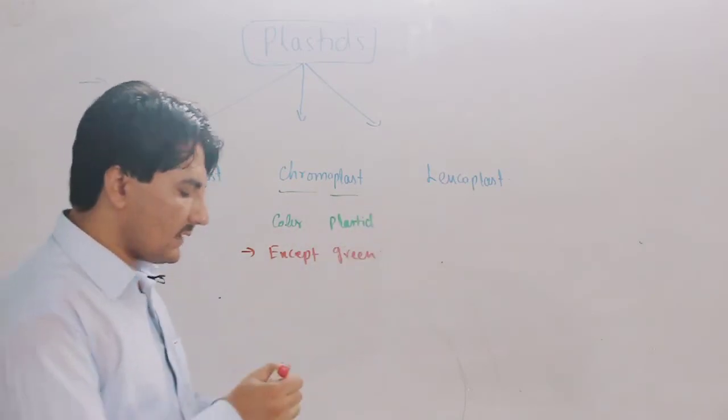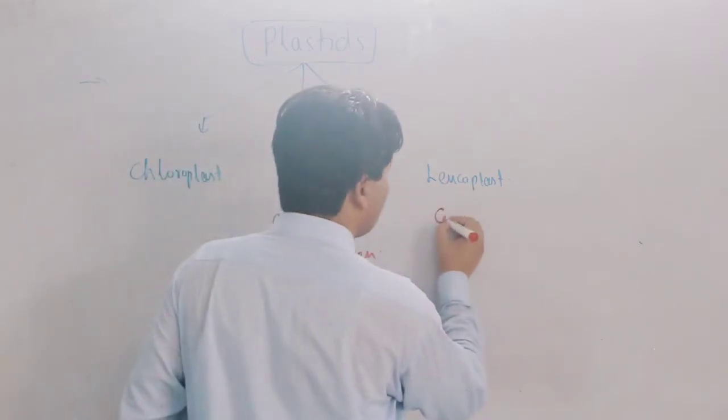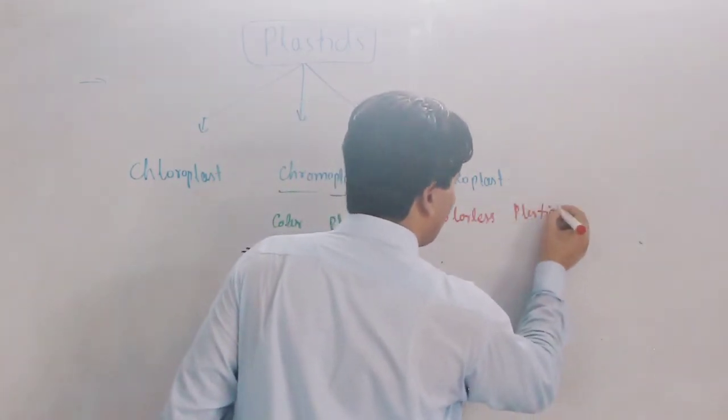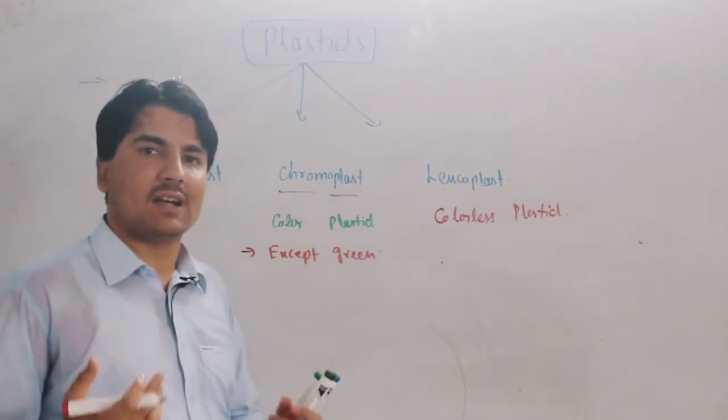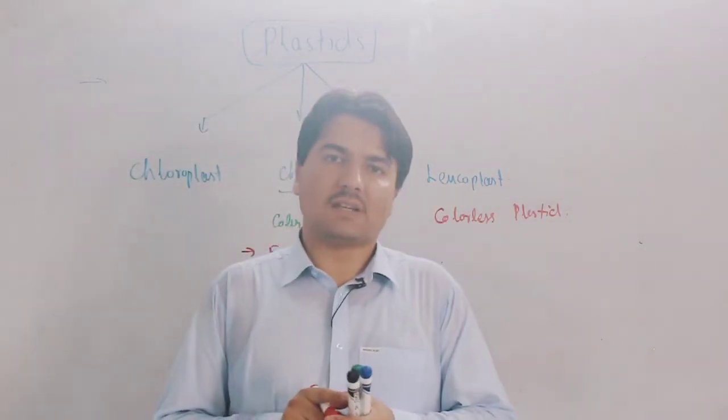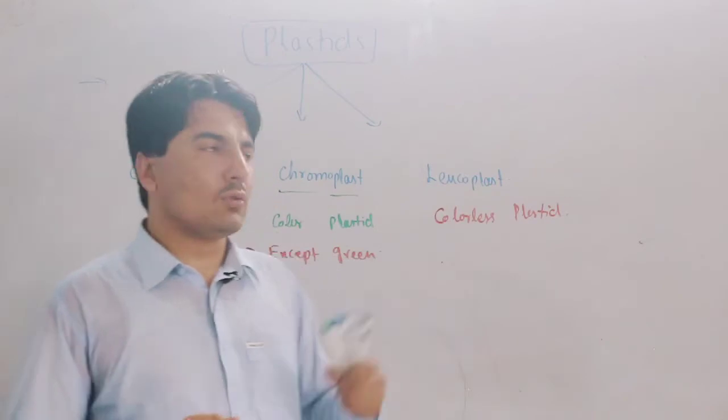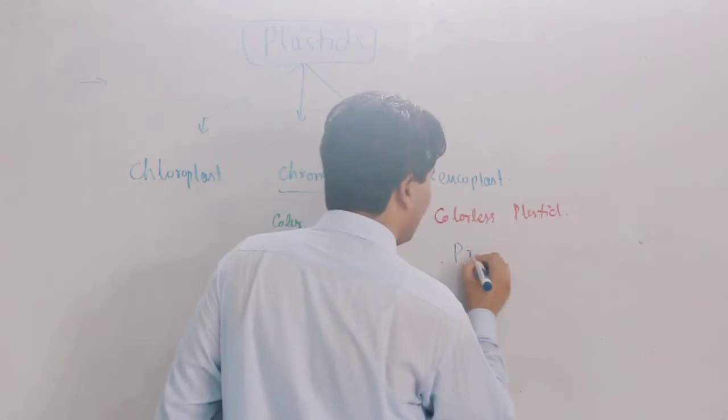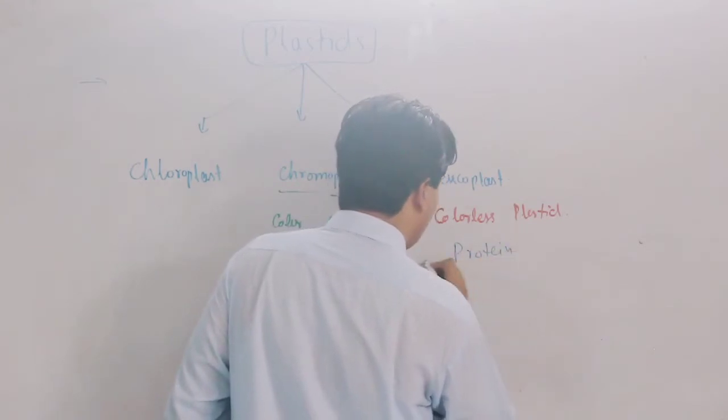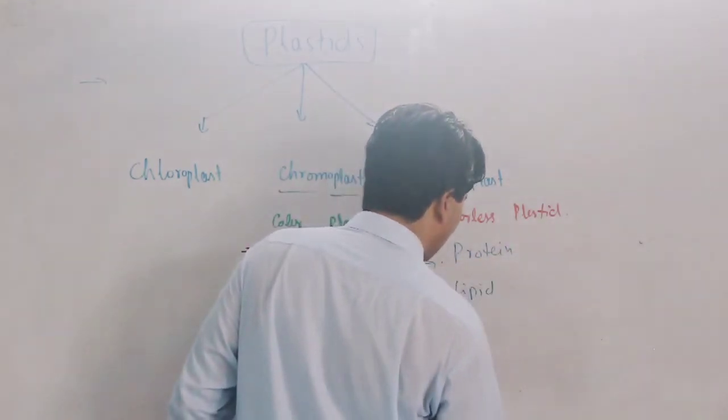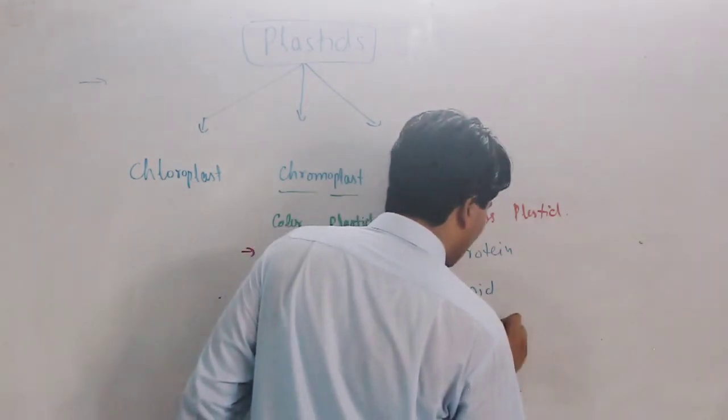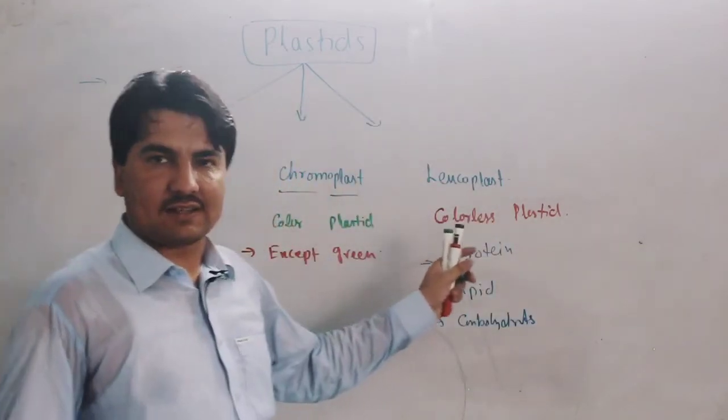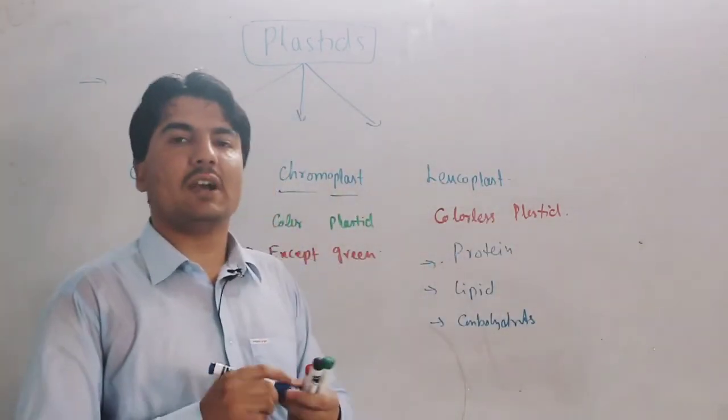Leucoplast is colorless plastic. This is found mostly in underground parts, just like tubers or roots. This is storage plastic, and it can store starch, protein, or lipids.